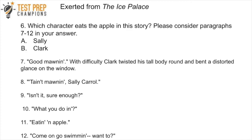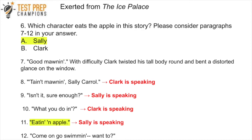Question 6: Which character eats the apple in the story? Please consider paragraphs seven through twelve. A. Sally, or B. Clark. To figure this out, you have to reason through the dialogue. In paragraph seven, someone says 'Good morning.' Then in paragraph eight it says 'It t'waint mornin', Sally Carroll' — since it addresses Sally Carroll by name, that means Clark is speaking, not Sally. So Clark is speaking to Sally in paragraph eight, meaning paragraph nine must be Sally, then ten is Clark, and eleven is Sally. In paragraph eleven, the reply is 'Eatin' an apple' — that's Sally speaking. So the answer is A, Sally.